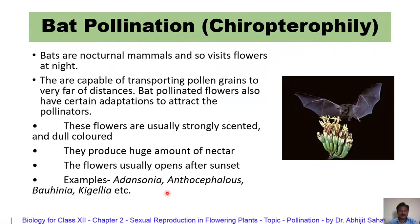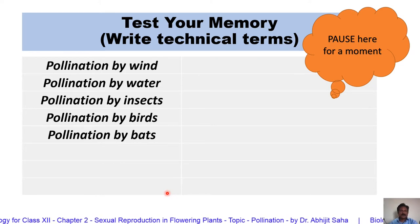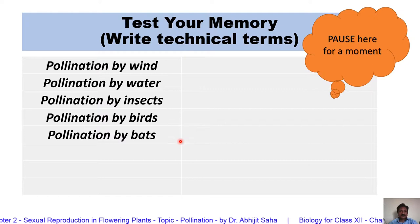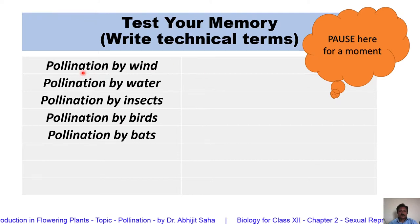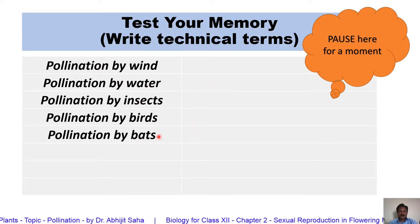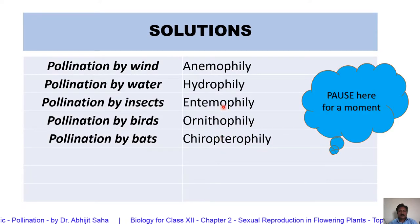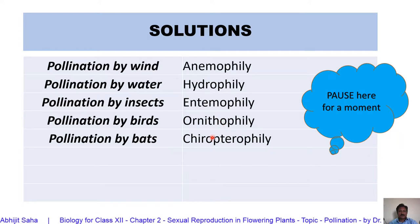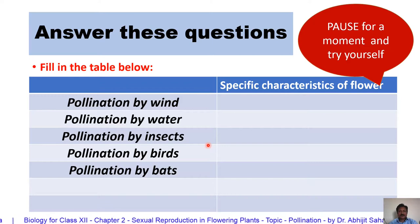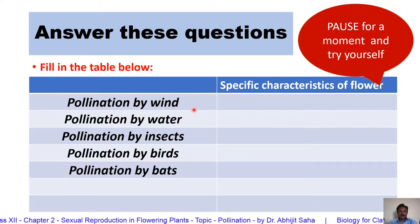With this we have completed the discussion on pollination. Now it is your turn: write the technical term for pollination by wind, by water, by insects, by birds, and by bats. The answers are: anemophily for wind, hydrophily for water, entomophily for insects, ornithophily for birds, and chiropterophily for bats. Now try to recollect at least two specific characters of each type — for example, what are the specific characters of wind-pollinated flowers?